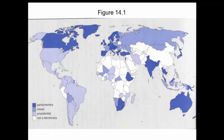Here's a map from the book, Figure 14.1, showing in dark blue the parliamentary systems around the world — Canada, Great Britain, much of Europe, India, Australia, South Africa. Several former British colonies are parliamentary systems. We'll talk about presidential systems in the next chapter, which includes the United States and much of South America. There are also systems that have both a parliament and a president sharing power, such as Russia and France. And of course, there are many countries that are not a democracy.